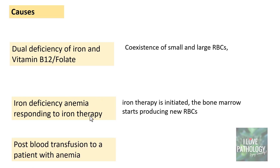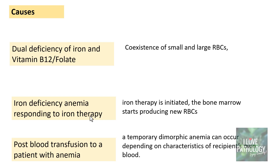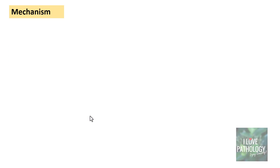Similarly, iron deficiency anemia responding to post blood transfusion — immediately after transfusion you can easily see two different populations of red blood cells. In the case of transfusion in microcytic anemia, these are usually normocytic normochromic RBCs alongside microcytic RBCs. If transfusion is done in a severe macrocytic anemia, you can find macrocytic and normocytic RBCs. That is the third cause of dimorphic anemia: post blood transfusion to a patient with anemia.